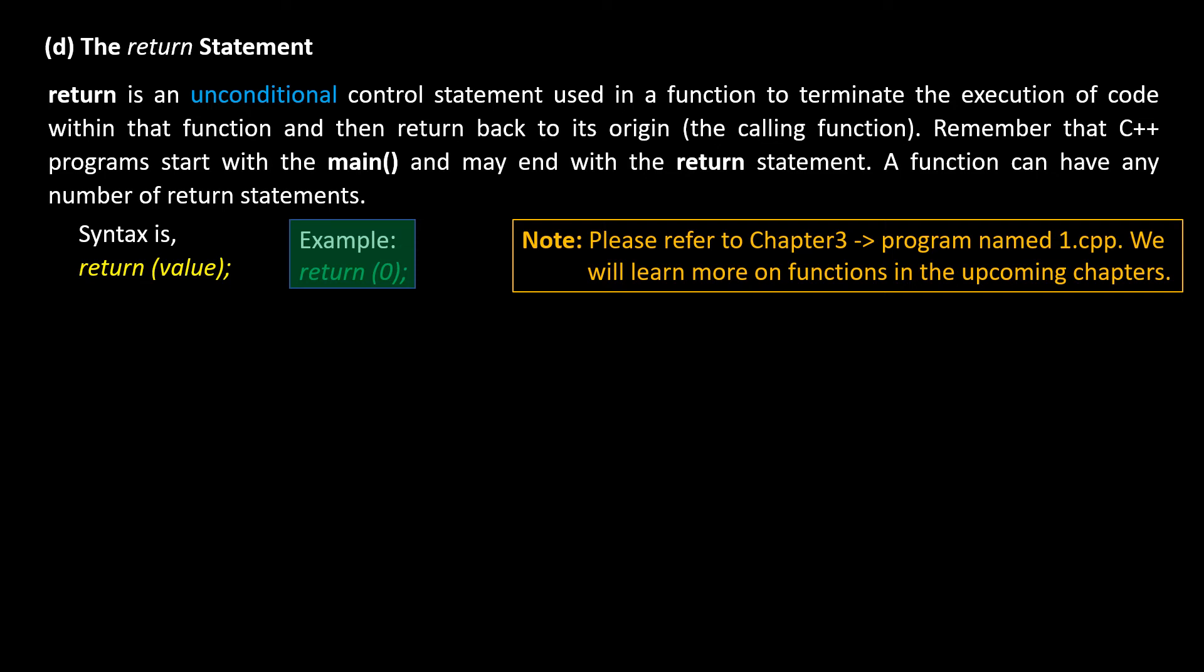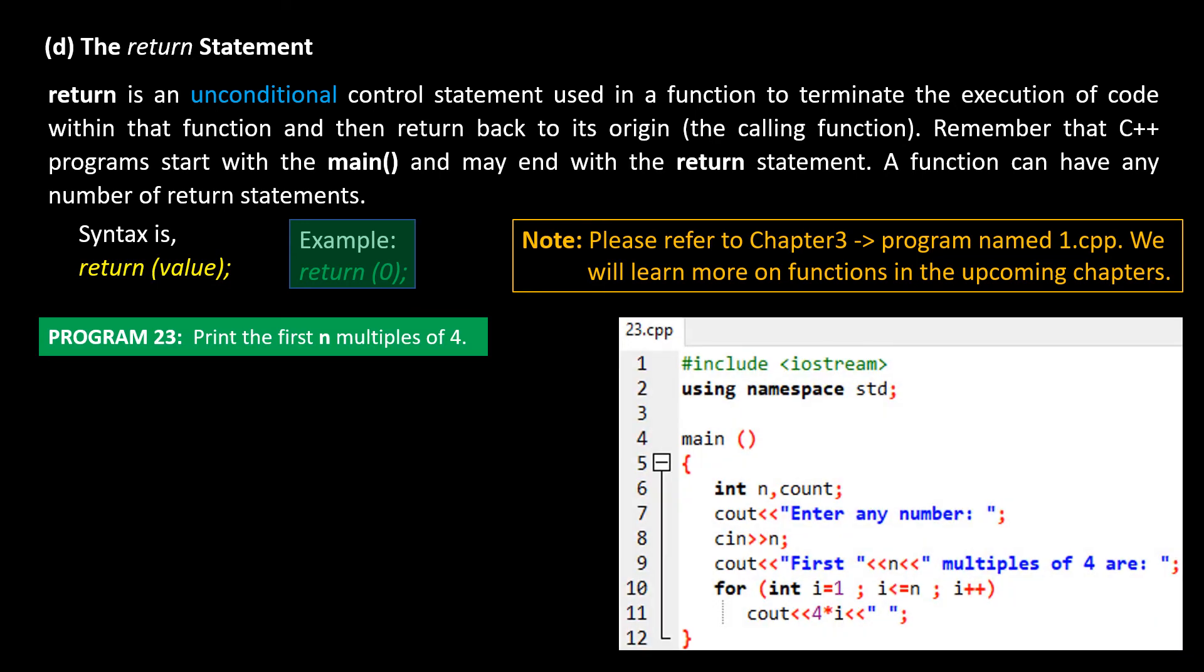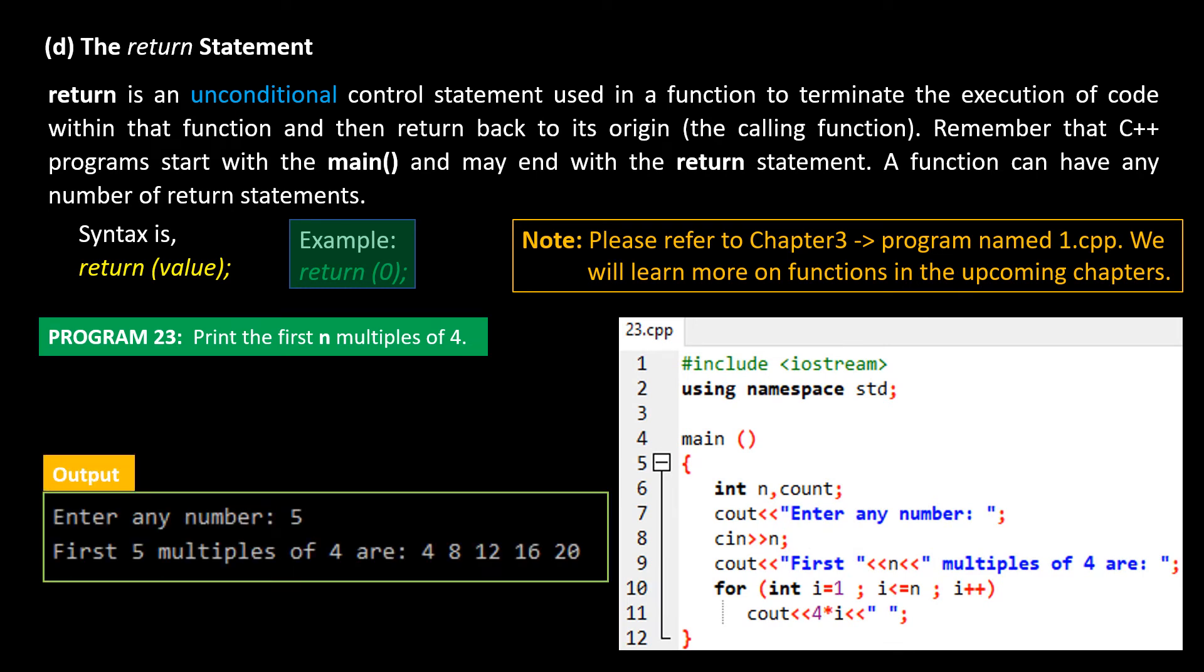We will now write a few quick simple programs to wrap up whatever we learned so far. Let's first write a program to print the first n multiples of 4. It's our program number 23. This is the program code, and here is the output. The user has asked for 5 multiples of the number 4, so the program prints it.